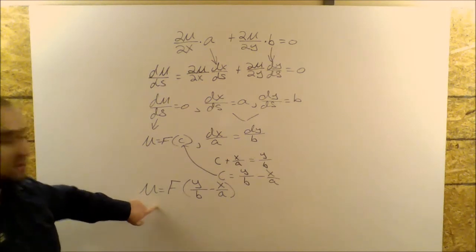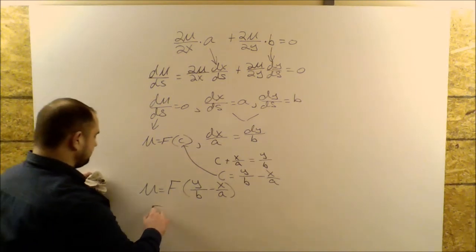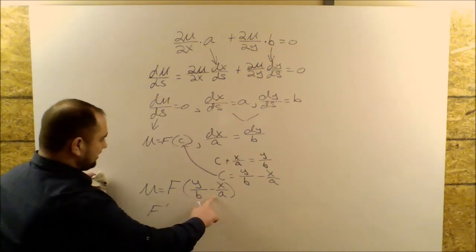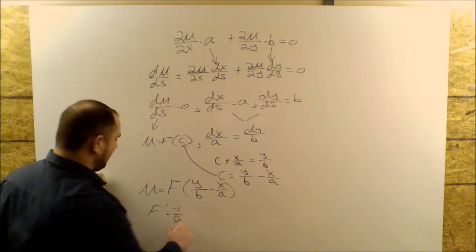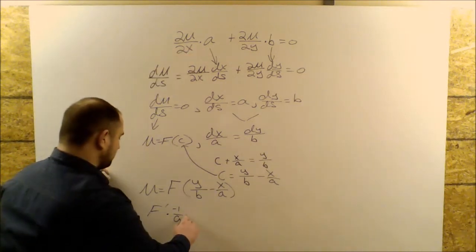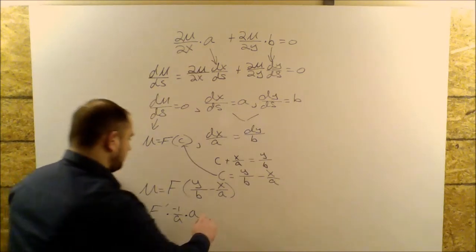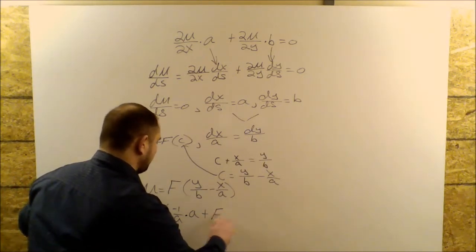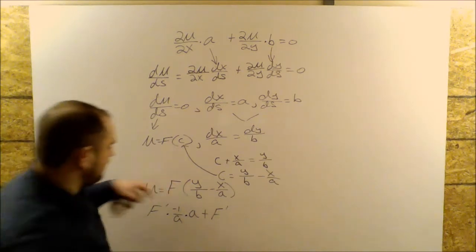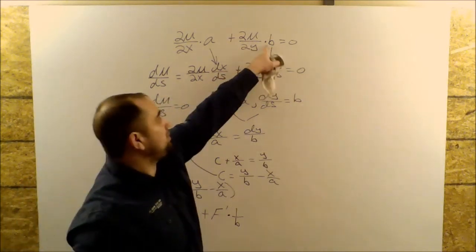Okay, so now if I take this and I plug it back into our PDE, then I get F prime. I'm differentiating with respect to X, so I get times minus 1 over A. Now I already have an A here, so I multiply by A. And then for our second term, I get plus F prime. I'm differentiating with respect to Y, so I get a 1 over B, but I've already got a B here.